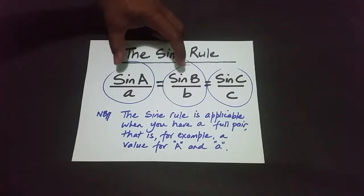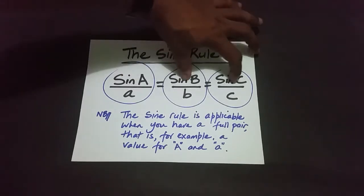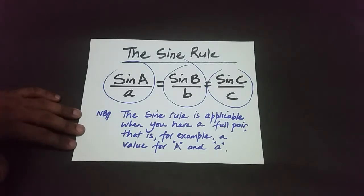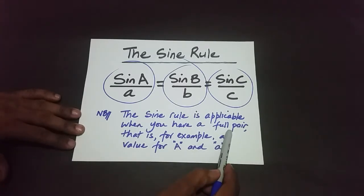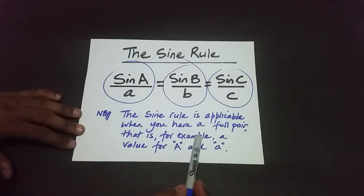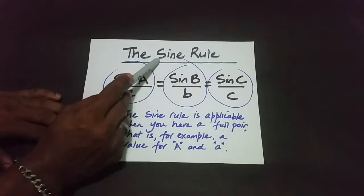Even though you have three pairs, to solve any particular problem involving the sine rule you only need two pairs. Depending on what information is provided and what you're asked to find, you'll end up using one specific combination of two pairs. You must have a full pair in order to use the sine rule.